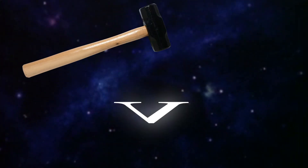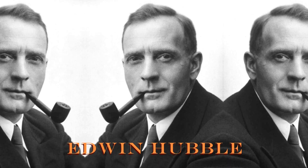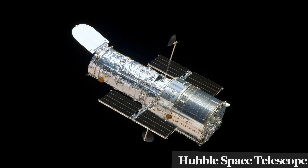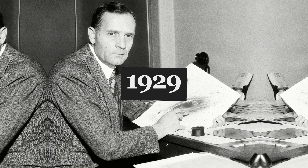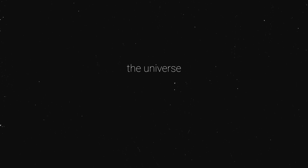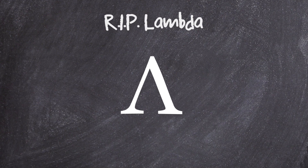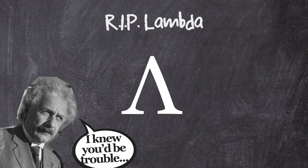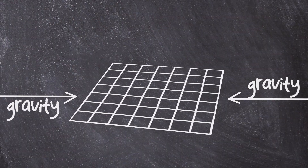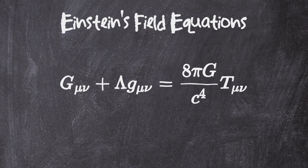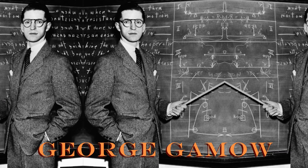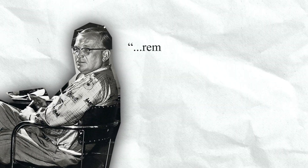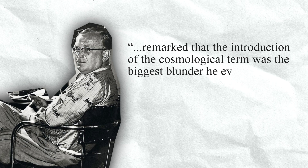Which brings us to the latest blow to Einstein's cosmological constant: Edwin Hubble. In 1929, after making a couple of observations and consulting with fellow scientists, he came to the conclusion that the universe is expanding. That was the final nail in the coffin for lambda. The equation was right from the beginning — no cosmological constant needed. The universe was expanding and gravity was slowly decreasing its rate of expansion. This resulted in Einstein removing lambda in subsequent publications, calling it unsatisfactory and redundant.